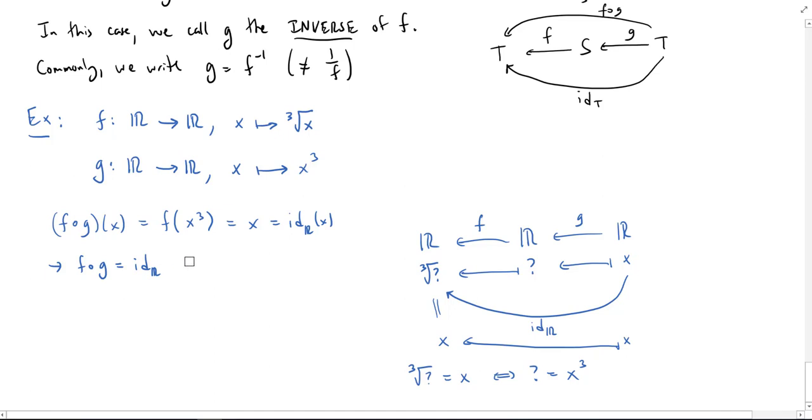Of course, we need the other direction as well. So let's check what happens when we compose the other direction. So first, I take f of x, which will be the cube root of x. Now I apply g, which will cube the cube root of x. Well, that's just x, which again is the identity map applied to x. And so once again, we conclude that the composition is equal to the identity map.